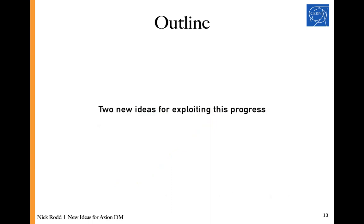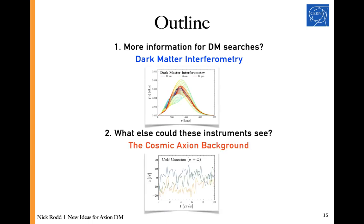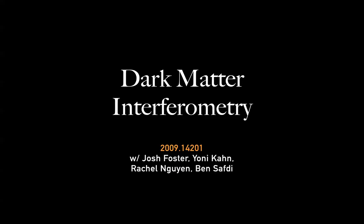Two new ideas take advantage of this enormous experimental progress. The first takes seriously the idea that dark matter is behaving like a wave in this regime and performs interferometry — combining measurements made at spatially distinct locations — to get new information. That's dark matter interferometry. The second considers the possibility that these instruments could see something they were not at all designed to detect: a genuine analogue of the cosmic microwave background made up of axion particles.